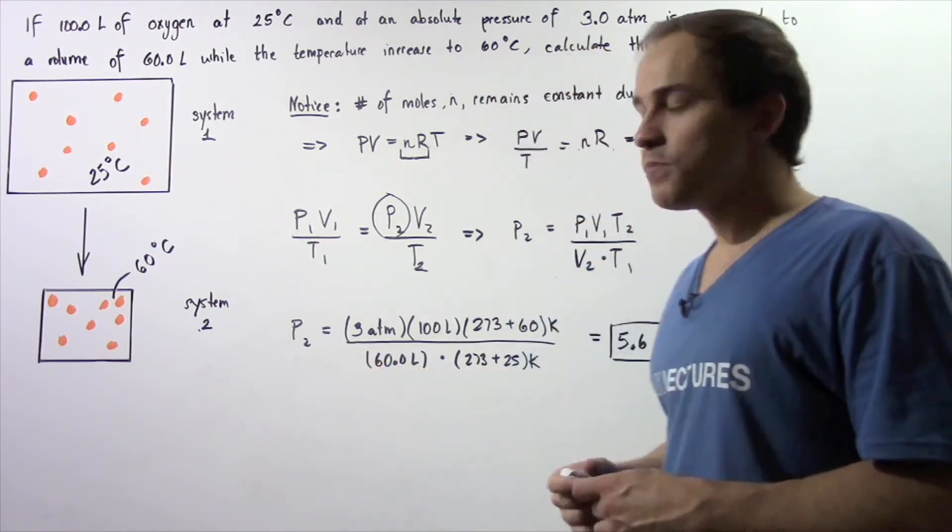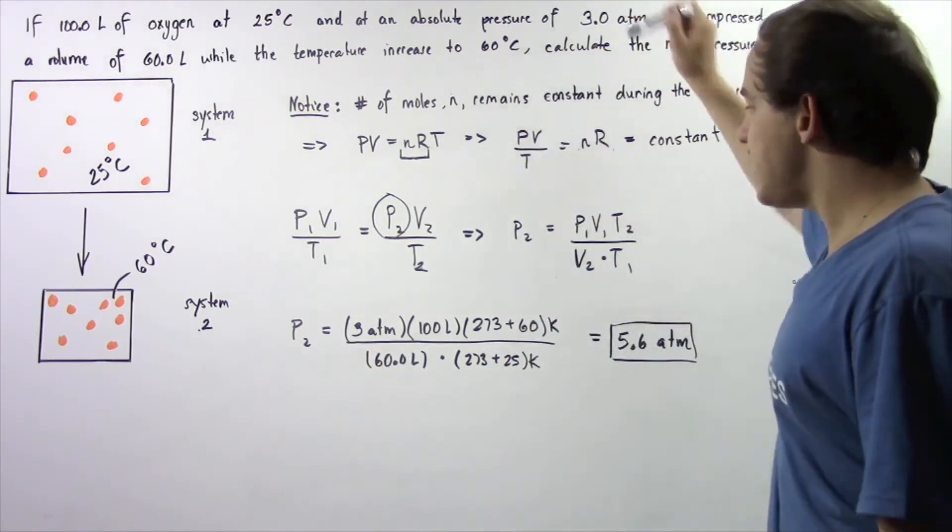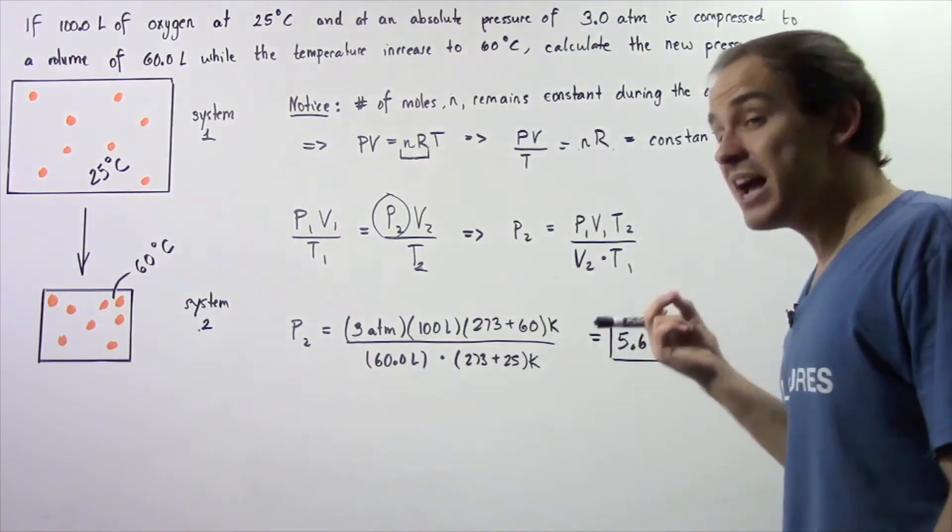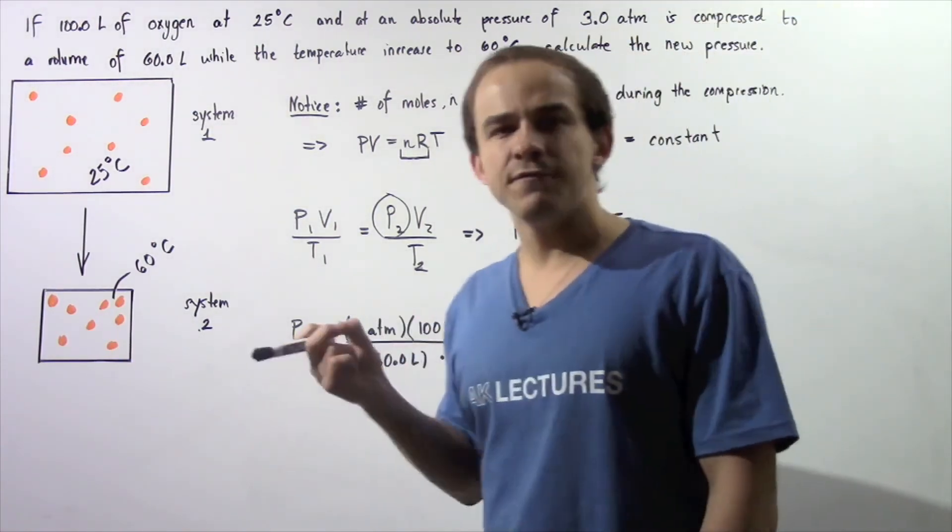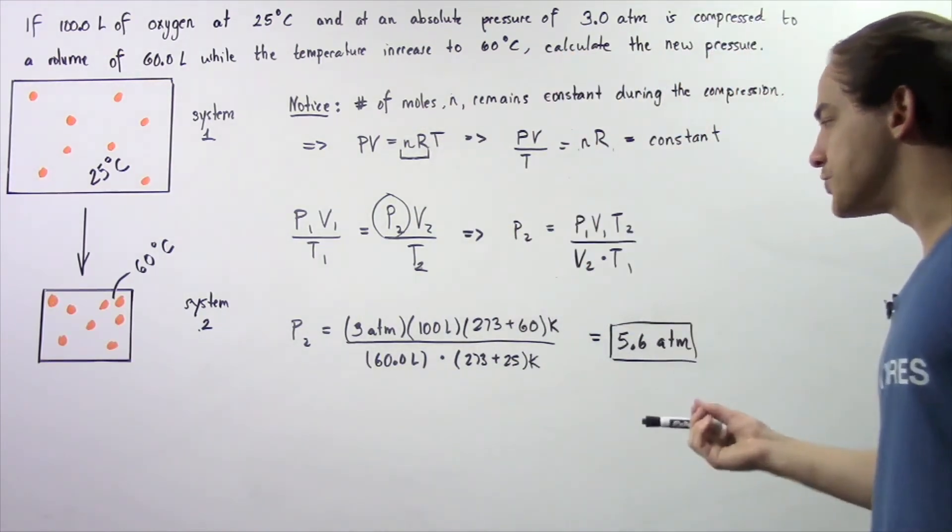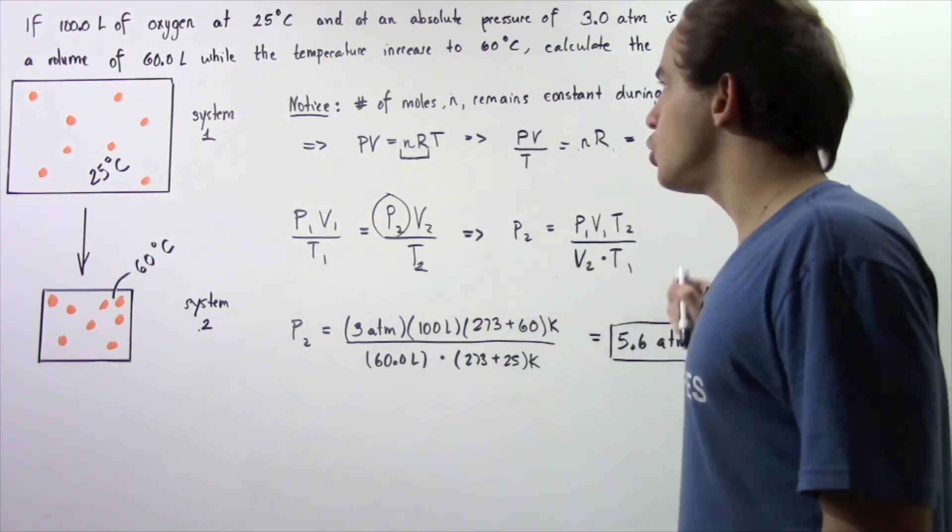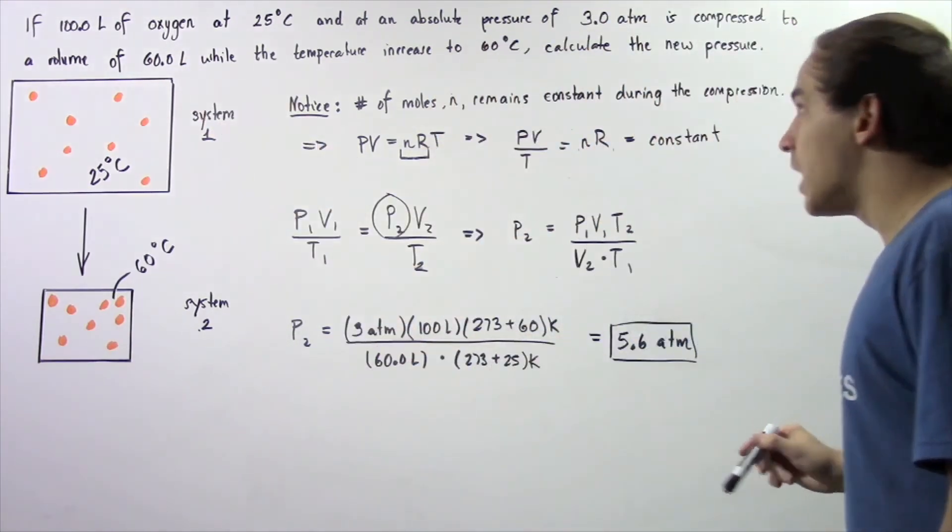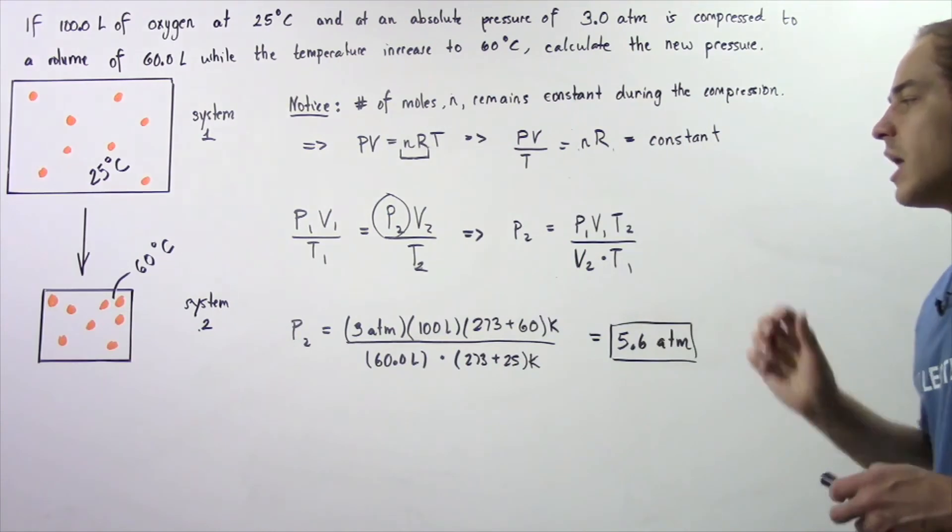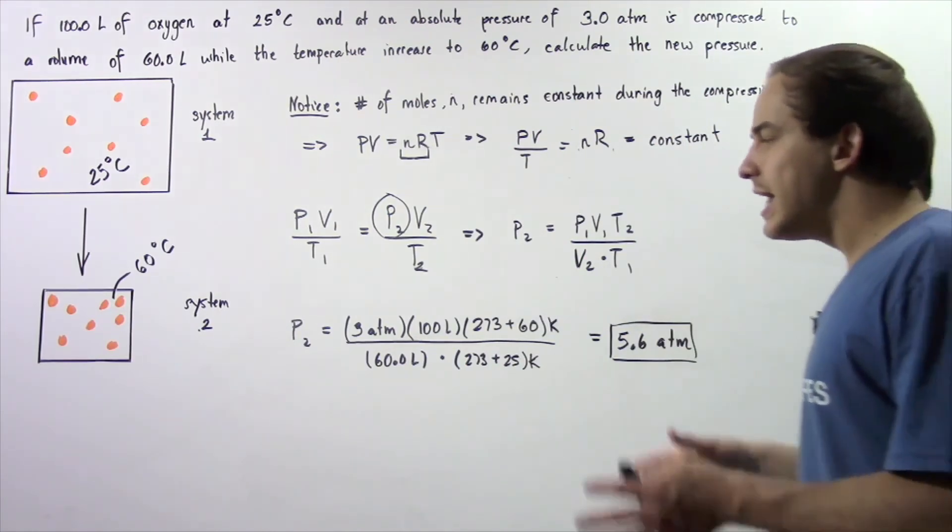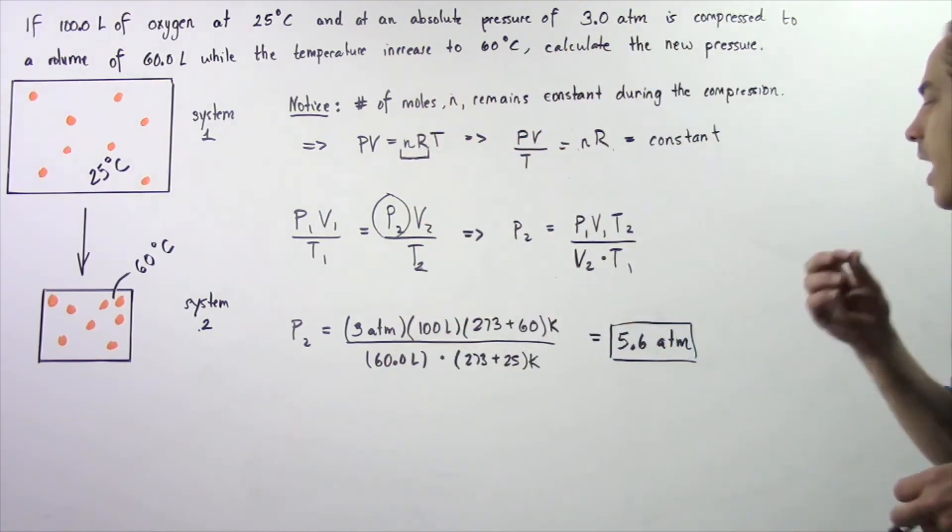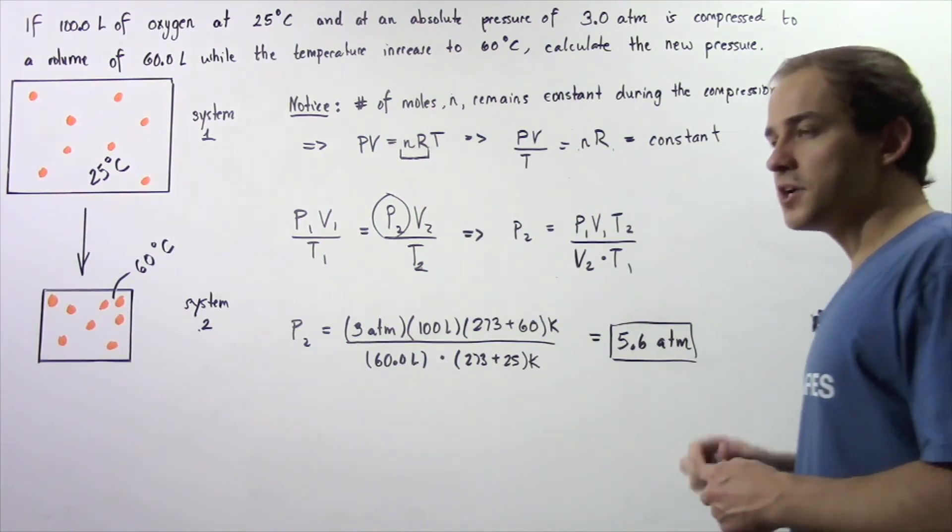P2 is equal to pressure one which is 3 ATM, volume one which is 100 liters, and the temperature of system number two given in Kelvins, so 273 plus 60 gives us the Kelvins. Now we divide that by volume two which is 60 liters multiplied by T1 which is 25 degrees Celsius plus 273. We plug that into our calculator and we get that the new pressure of system number two when our compression takes place is about 5.6 atmosphere pressures.